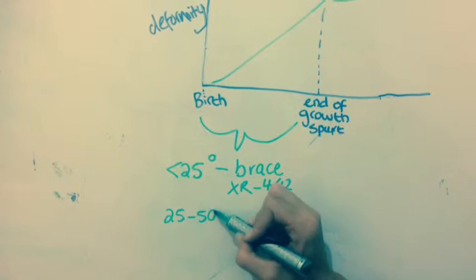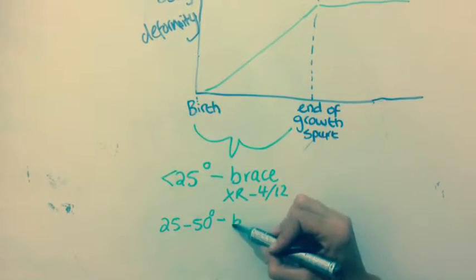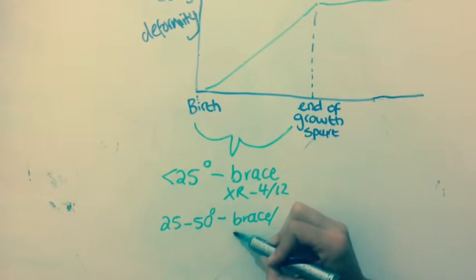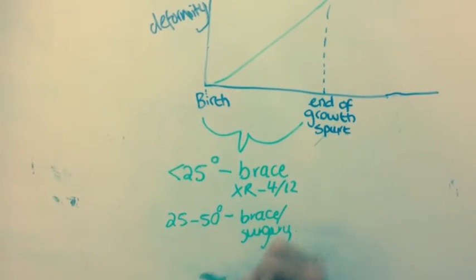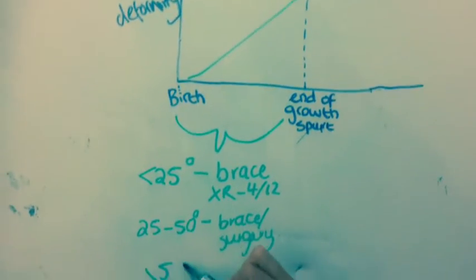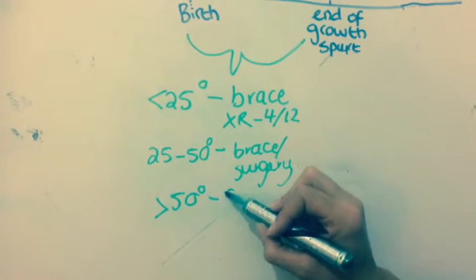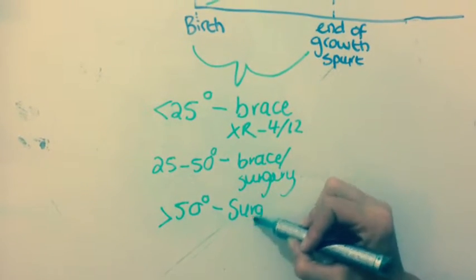A moderate curve, 25 to 50 degrees, offer brace or surgical correction. In a severe curve, which is more than 50 degrees, corrective spinal fusion is required.